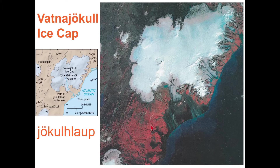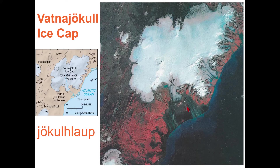This image is false color infrared — healthy vegetation shows up as red. A delta-like feature shows where vegetation was stripped away by the glacial outburst flood. I've seen helicopter footage of the flood with blocks of ice the size of multi-story apartment buildings tumbling downstream. That flood is called a jökulhlaup.